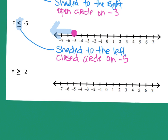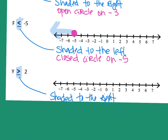The last question says Y is greater than or equal to positive 2. First, look at the symbol — greater than means I'm going to shade to the right, since greater numbers are to the right. Because it also has the line underneath, I would do a closed circle on positive 2. Draw and shade the closed circle on 2, then shade to the right and put an arrow on the end of the line.